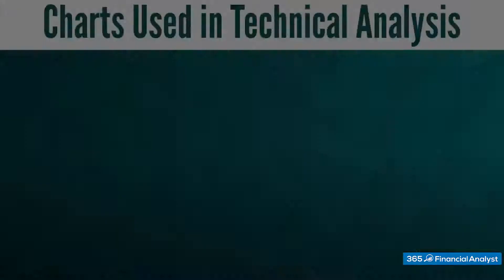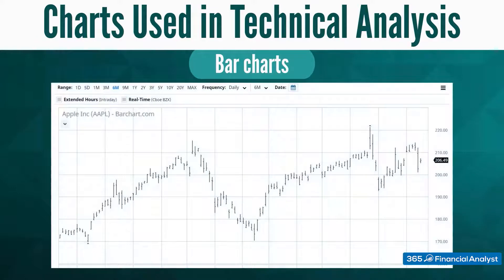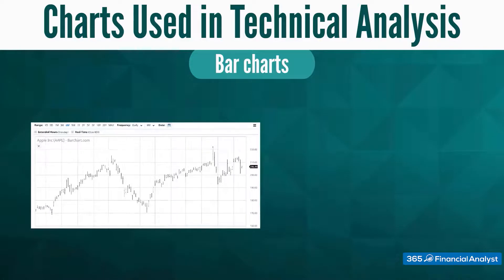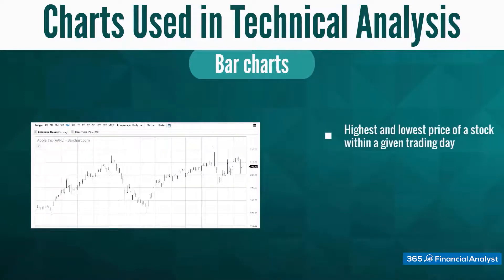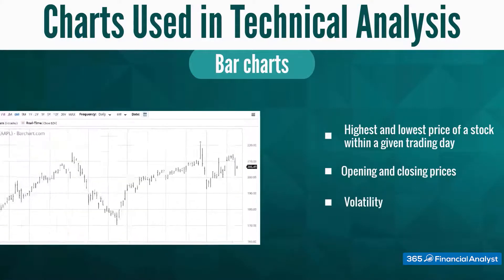The next type of chart we'll look at is a bar chart. It's a bit more information-rich than a line chart. A bar chart is composed of bars — each bar provides three interesting pieces of information: first, the highest and lowest price of a stock within a given trading day; then, the opening and closing prices of that day; and the volatility during the trading day.